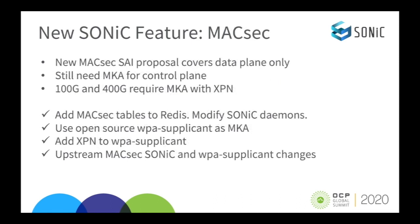The second new Sonic feature we will demonstrate is MACsec with MKA. There is a new MACsec SAP proposal, but if you read it, you will discover that it covers data plane operations only. We still need MKA for the control plane, and MKA must be extended with XPN to support 100G and 400G interfaces often found on a modular chassis. Like MPLS, to integrate MACsec we had to add tables to Redis and modify the Sonic daemons accordingly. For MKA, we used open source WPA supplicant. We have added XPN — extended packet numbering — to WPA supplicant to handle high-speed interfaces. And again, we will upstream MACsec and WPA supplicant changes to the community.